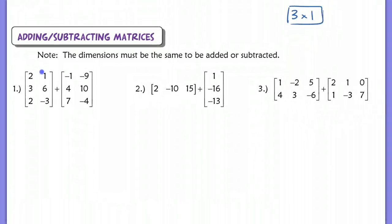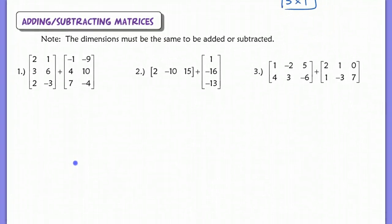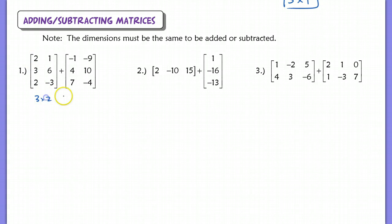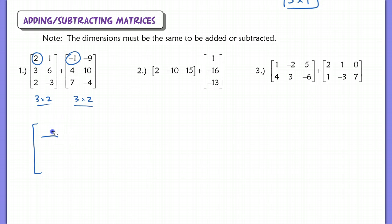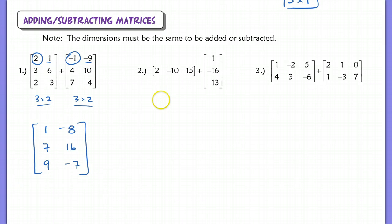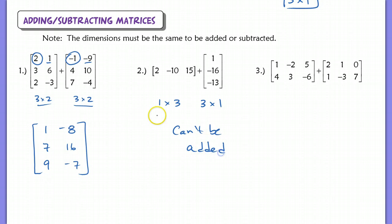When you add or subtract matrices, the dimensions must be the exact same in order to be added. So for example, this is a 3 by 2 matrix, and this is also a 3 by 2 matrix. Since they are the same dimension, we can add them. All you have to do is look in the first row, first column — it needs to be added to the digit in the first row, first column here. So 2 plus negative 1 gives me 1 in that first slot. Then I take 1 and negative 9 and add those together as well. In part 2, you're trying to add a 3 by 1 to a 1 by 3 — they are not the same dimension, so you can't add them.